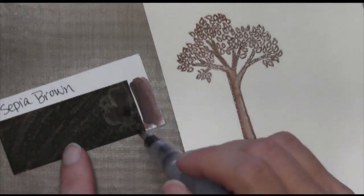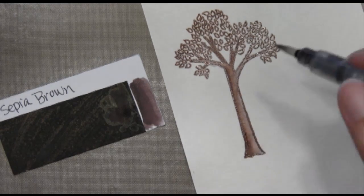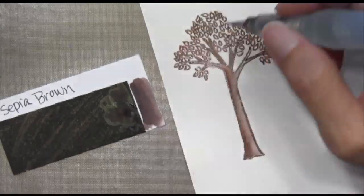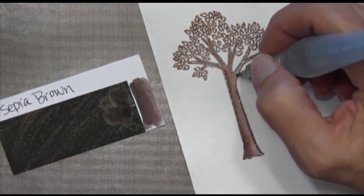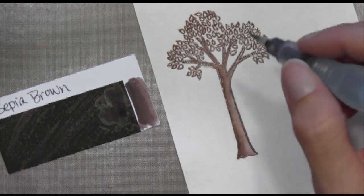You can always blend it out with a little bit more water. And the nice thing about these watercolors is that they do layer. So you can make certain areas darker by just letting it dry for a minute and putting another layer of color on.